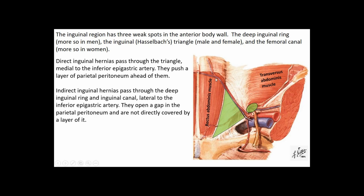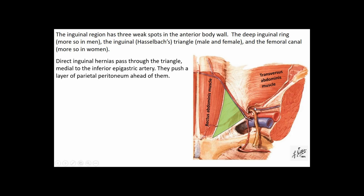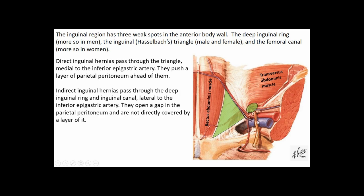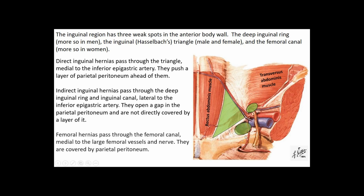If the hernia passes lateral to the inferior epigastric artery and vein, it's likely to pass through the deep inguinal ring, through the inguinal canal, and potentially out the superficial inguinal ring — and may slide in and out or remain heading toward the scrotum. Because there's an existing weak spot, it can push through without being covered by parietal peritoneum. This is an indirect inguinal hernia — it takes a roundabout path through the deep inguinal ring, inguinal canal, superficial inguinal ring, and potentially into the scrotum, or in females into the labia majora.